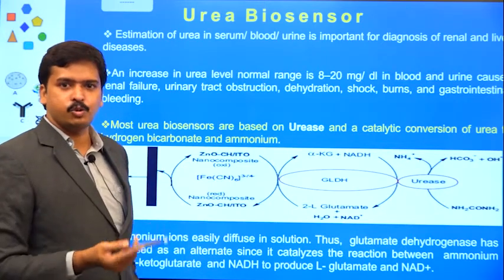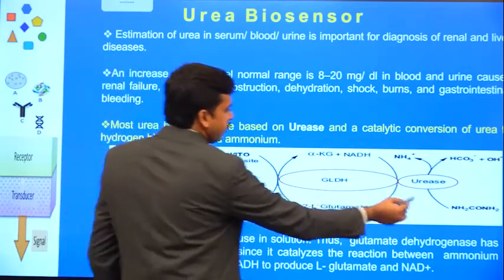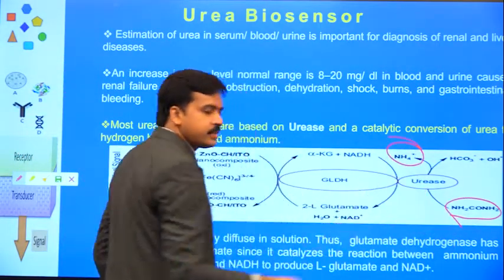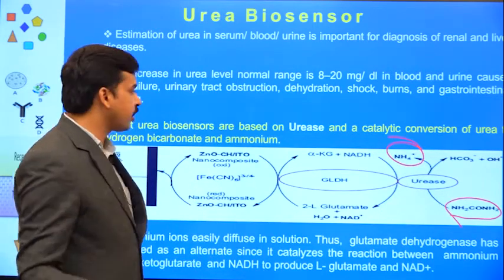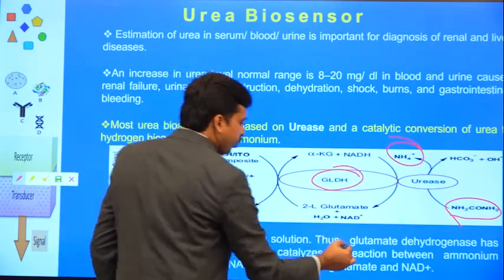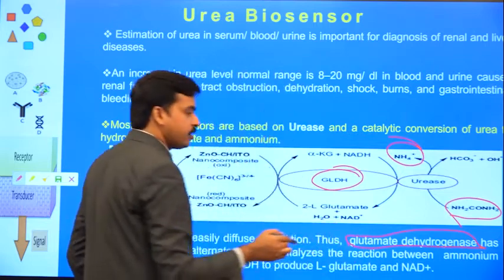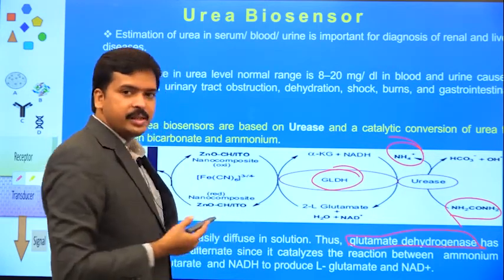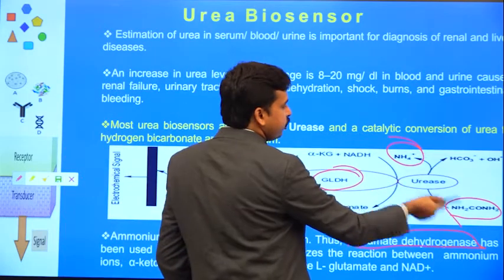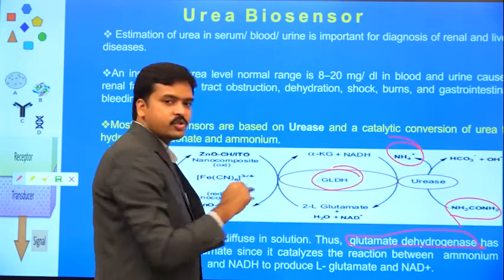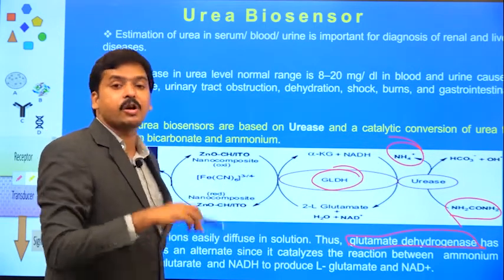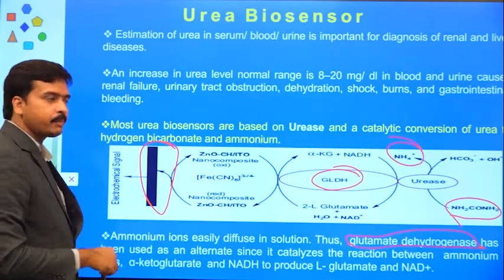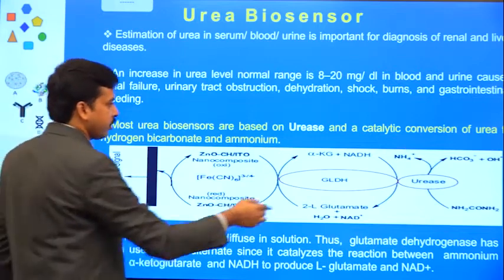The second popular example is urease. Urea, in the presence of urease, gives you ammonia, which is highly unstable and easily dissolves in water, so its concentration cannot be measured quickly. In such cases, a single enzyme will not help, so you take another enzyme — glutamate dehydrogenase — making this a series of multi-enzyme reactions. They cannot happen parallelly because first, urease has to convert urea into ammonia, and only after ammonia formation does the next step proceed. Finally, the transducer converts the whole thing and gives you the signal.